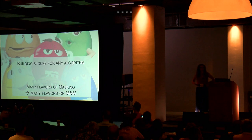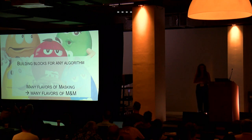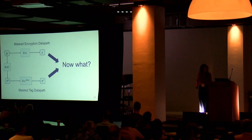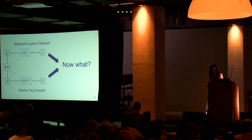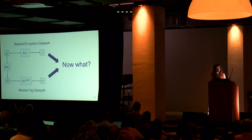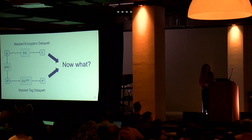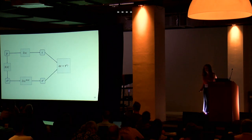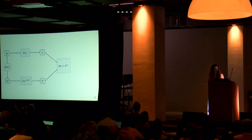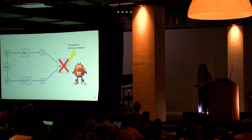With these building blocks, you can make an MnM implementation for any algorithm. Remember there are a lot of masking papers out there, so you can find a lot of building blocks to plug in here. Now the question is: we've figured out how to compute with our redundancy, but we have to actually use this redundancy to have protection against faults. One thing we could do is an error check — but then you have to unmask the difference between what the tags are and what the tags should be, which is alpha times C. We don't want to do this because it's quite vulnerable to combined attacks.